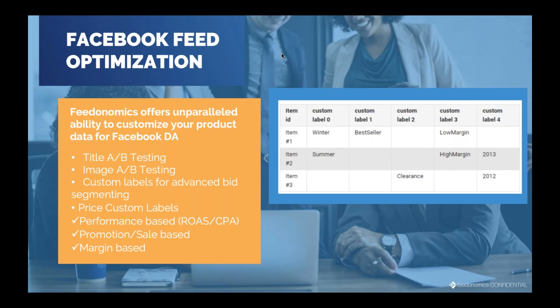Another constantly underutilized feature for Facebook dynamic ads is custom labels. Normally bid segmentation is done on category and brand, but there are very specific ways to use custom labels to get very granular in your bid segmentation. One common example is price. You might be selling two pairs of Nike shoes — one at sixty dollars and another, say an autographed Michael Jordan shoe, at ten thousand dollars. Clearly there's a lot more you can spend on the expensive one to reach profitability, so you can afford to bid more on it. Custom labels let you create bidding groups based on price range.